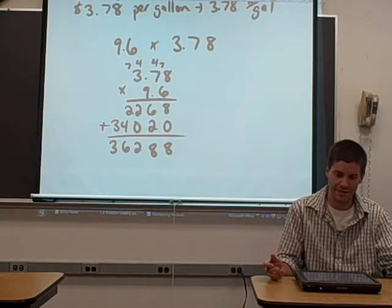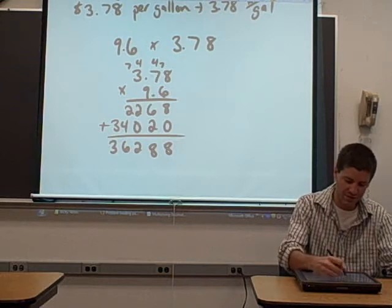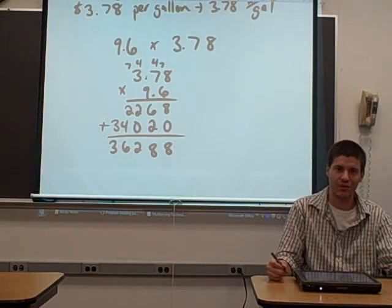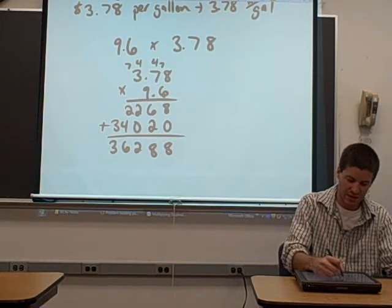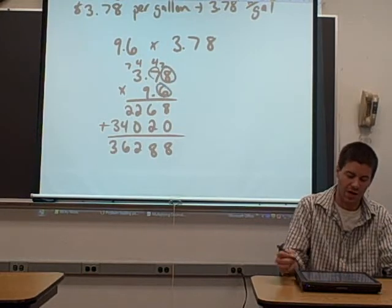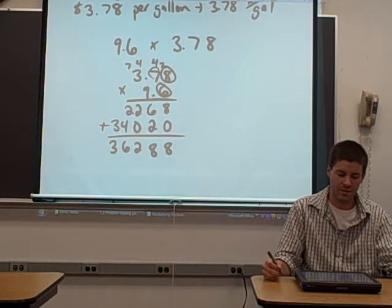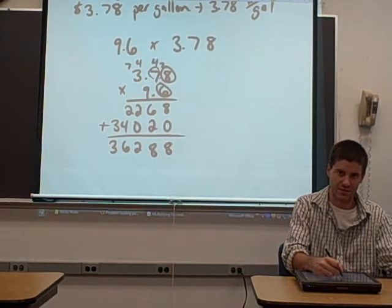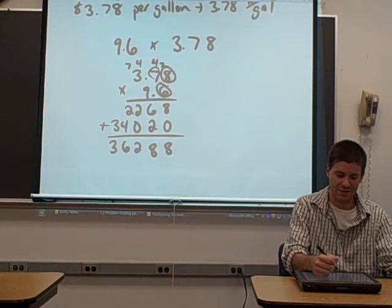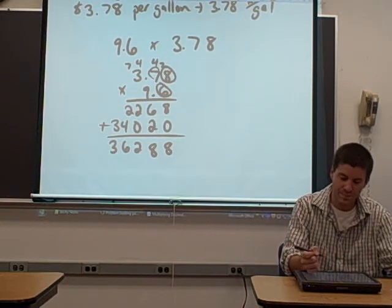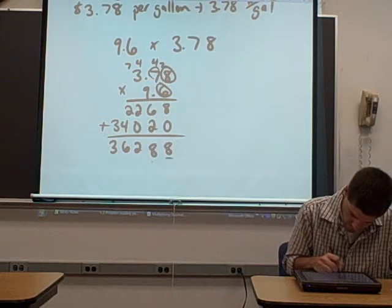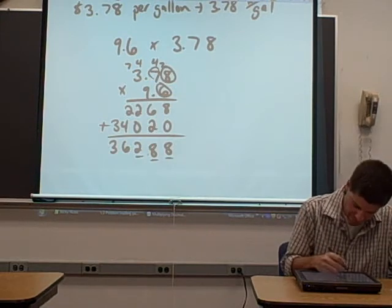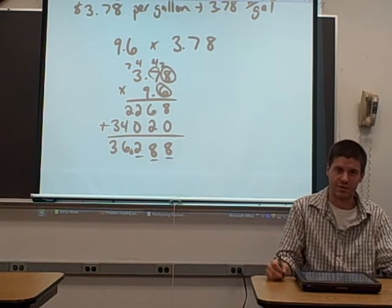We have some decimals, so let's bring them back in now. What we do is we count the digits to the right of the decimal in the original problem, in the multiplication. It looks like we have three digits to the right of decimal places in the problem. That means we need three digits to the right of our decimal places in the answer. So we count one, two, three digits, and we put a decimal place in there.